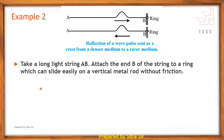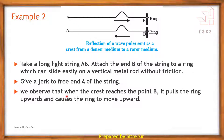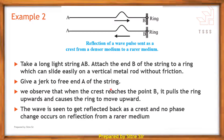Example 2: Take a long, light string AB and attach end B to a ring which can slide easily on a vertical metal rod without friction. Give a jerk to the free end A of the string. We observe that when the crest reaches point B, it pulls the ring upward and causes the ring to move upward. The wave gets reflected back as a crest, and no phase change occurs on reflection from the rare medium.